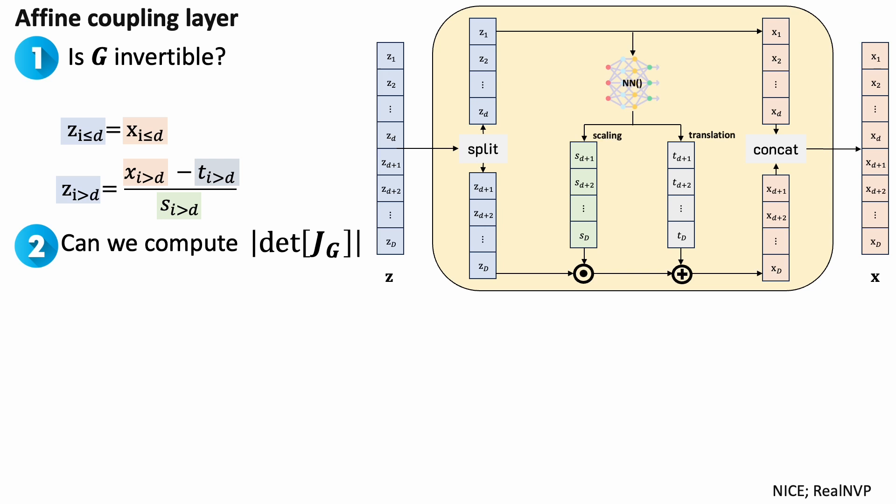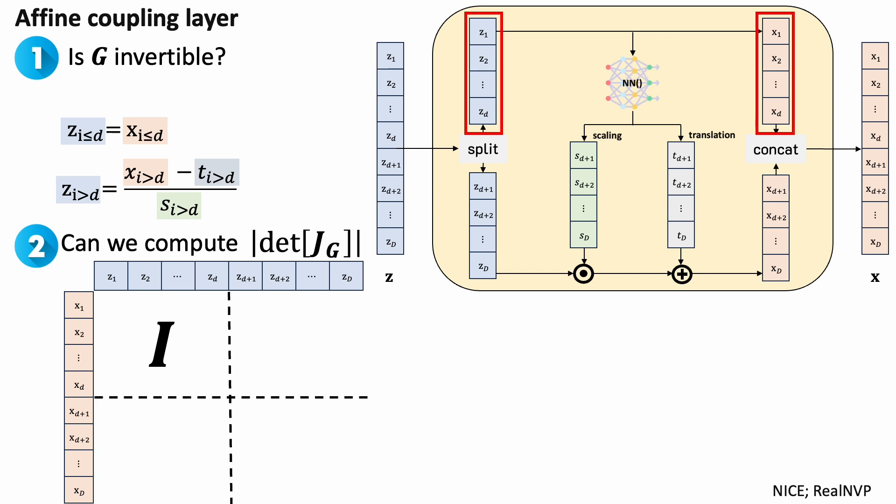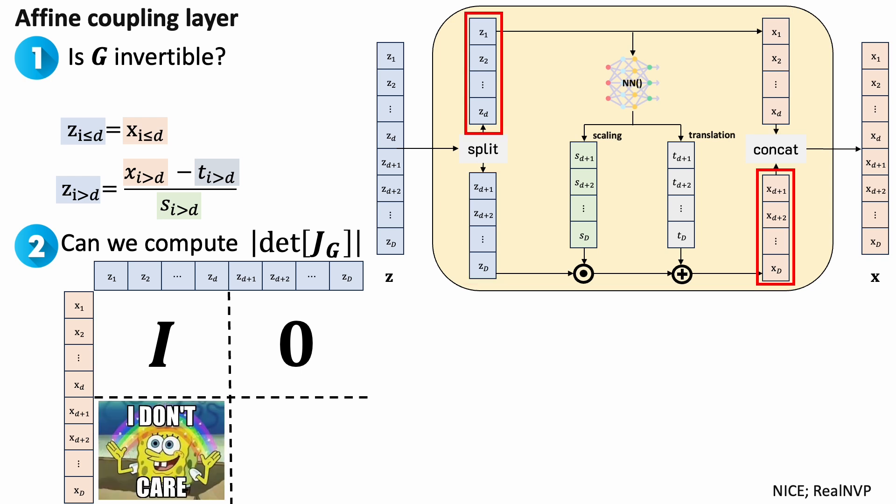Second, can we compute the determinant of the Jacobian matrix efficiently? Here is the Jacobian matrix of a coupling layer. The top left part is an identity matrix since we copy the first half of the input directly to the output. The top right part is all zeros because the output vector has nothing to do with the input here. The bottom left part is tricky. The Jacobian matrix can be very complex since it involves a neural network. But we don't care. It does not affect the value of the determinant. Finally, the bottom right part is a diagonal matrix because it only has element-wise multiplication and addition. The determinant is just the multiplication of all the predicted scaling values.